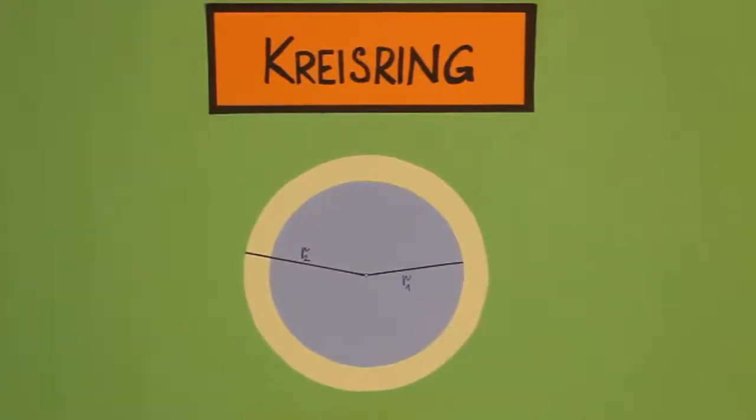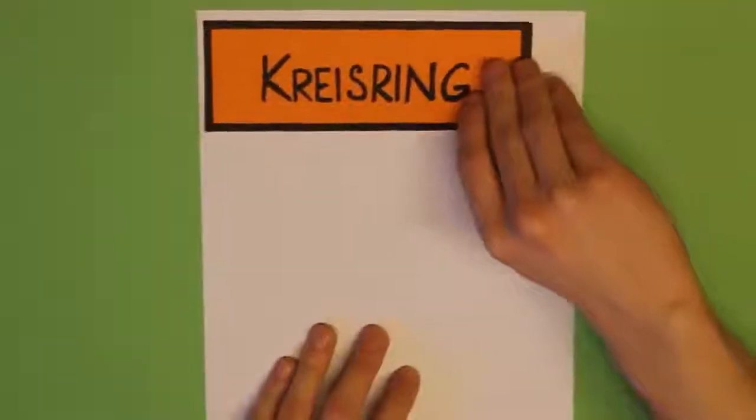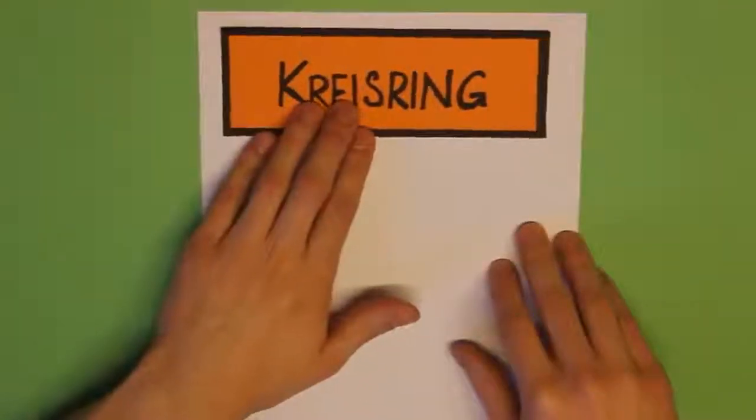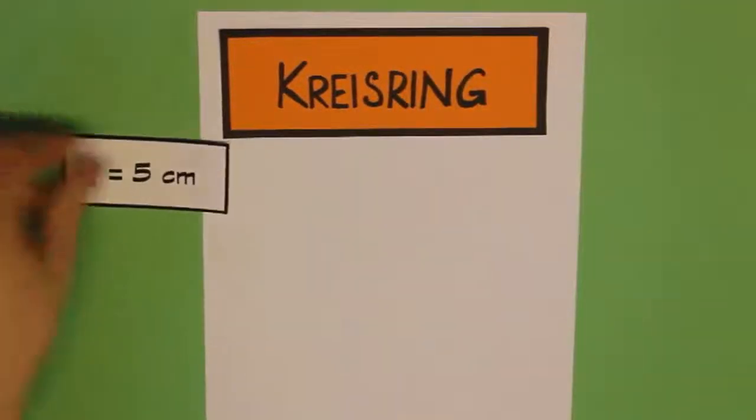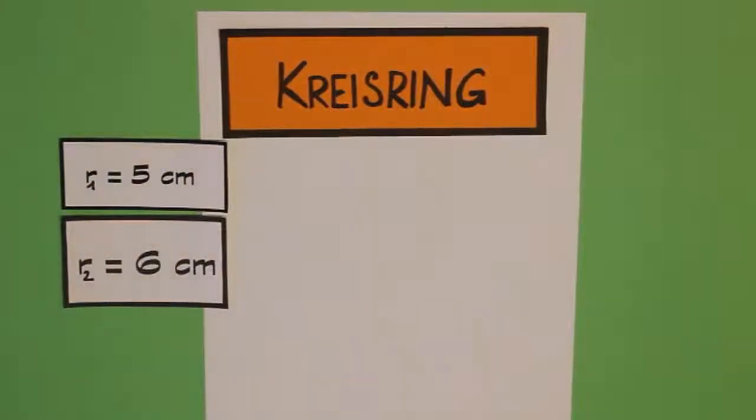So, jetzt konstruieren wir auch noch schnell einen Kreisring. Das sollte eigentlich kein Problem sein. Wir benötigen dazu natürlich zwei verschiedene Radien. Und wir nehmen jetzt einfach für den ersten Radius 5 cm und der zweite Radius R2 soll 6 cm betragen.